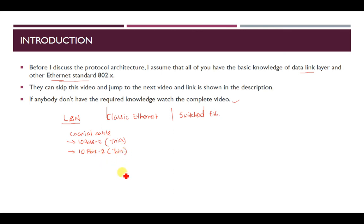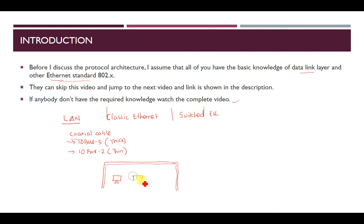How the LAN is maintained: a long piece of coaxial cable, let's say 10Base5, is installed in a room on the wall itself. Then computers are connected to this coaxial cable through T-joints. This is how, in the initial period, classic ethernet works. The data flows through this coaxial cable, which acts as the data flow medium.